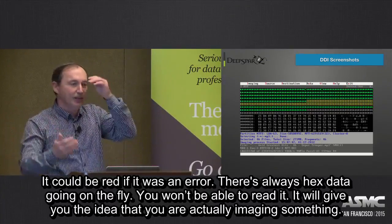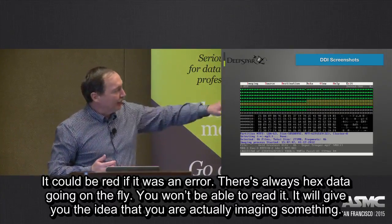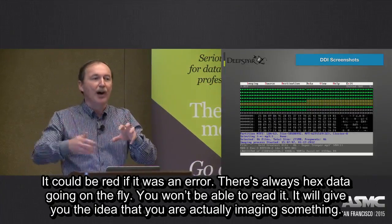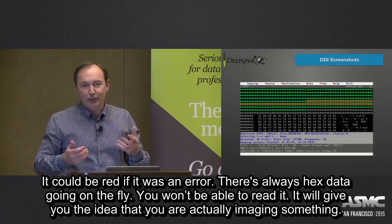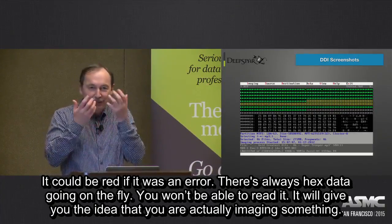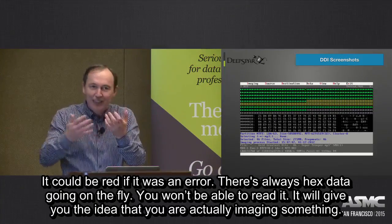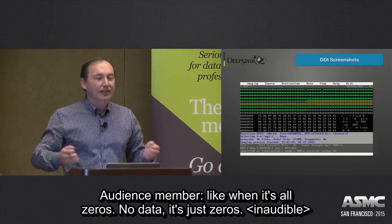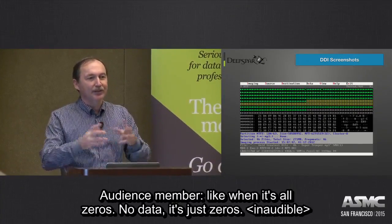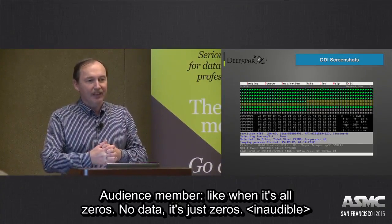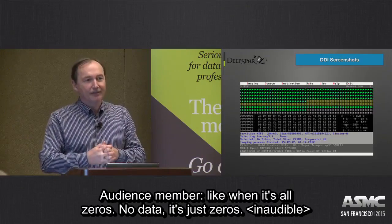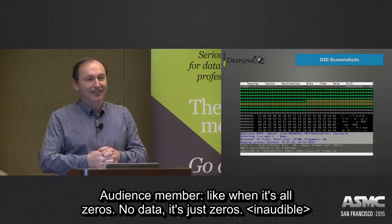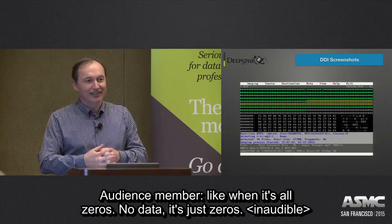It could be read again if there was an error. There is always hex data going on the fly — you won't be able to read it, but it gives you an idea that you are actually imaging something. Because if it's all zeros, in an area with no data, it's just zeros. All a human can tell is: there's data, or it's zeros.